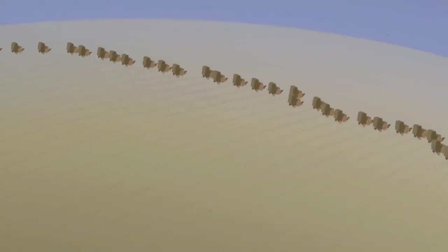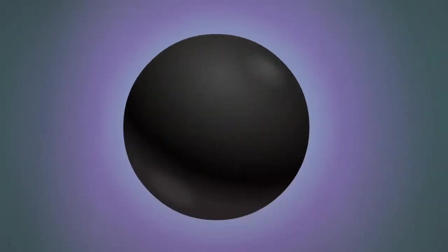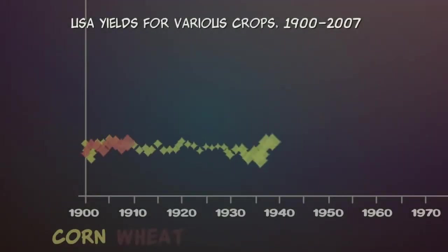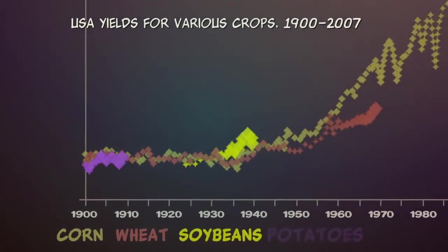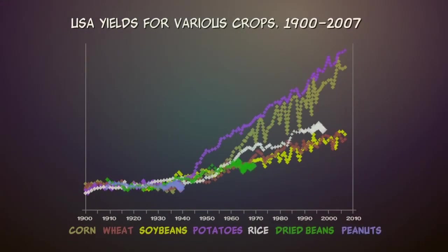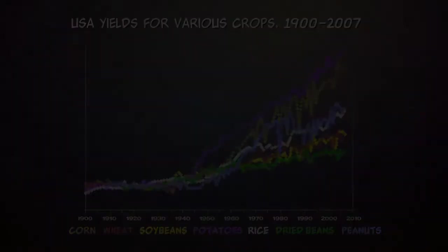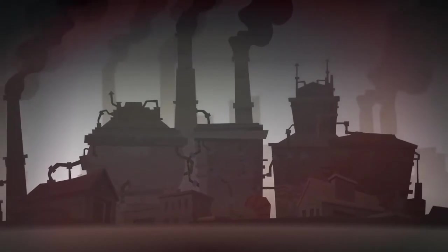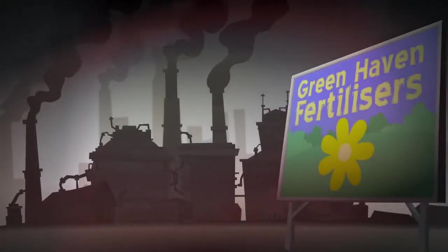The global food supply relies heavily on fossil fuels. Before World War I, all agriculture was organic. Following the invention of fossil fuel-derived fertilizers and pesticides, there were massive improvements in food production, allowing for increases in human population. The use of artificial fertilizers has fed far more people than would have been possible with organic agriculture alone.